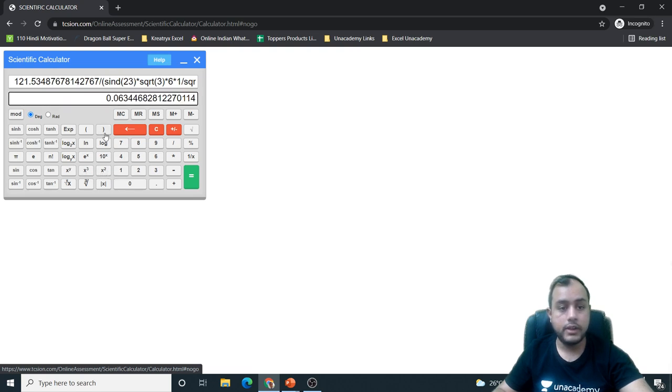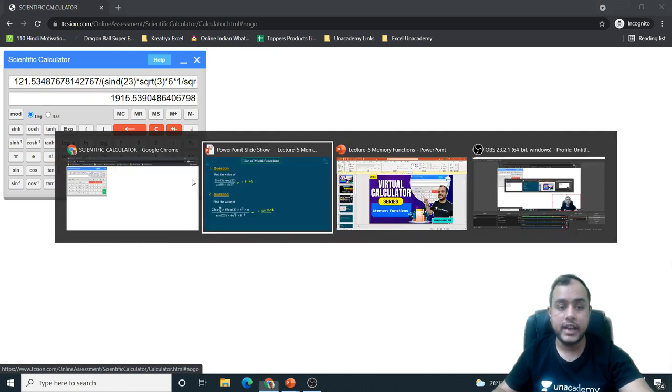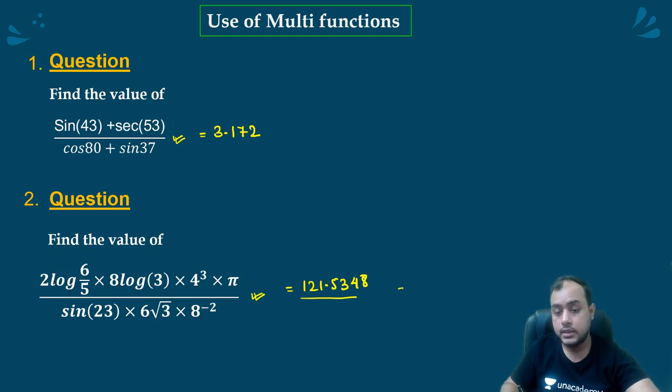Now I will close the bracket. I will press equal to 1915.539. So that is, you can do a lot of stuff by the use of brackets also and a bit of common sense, like 8 to the power minus 2.